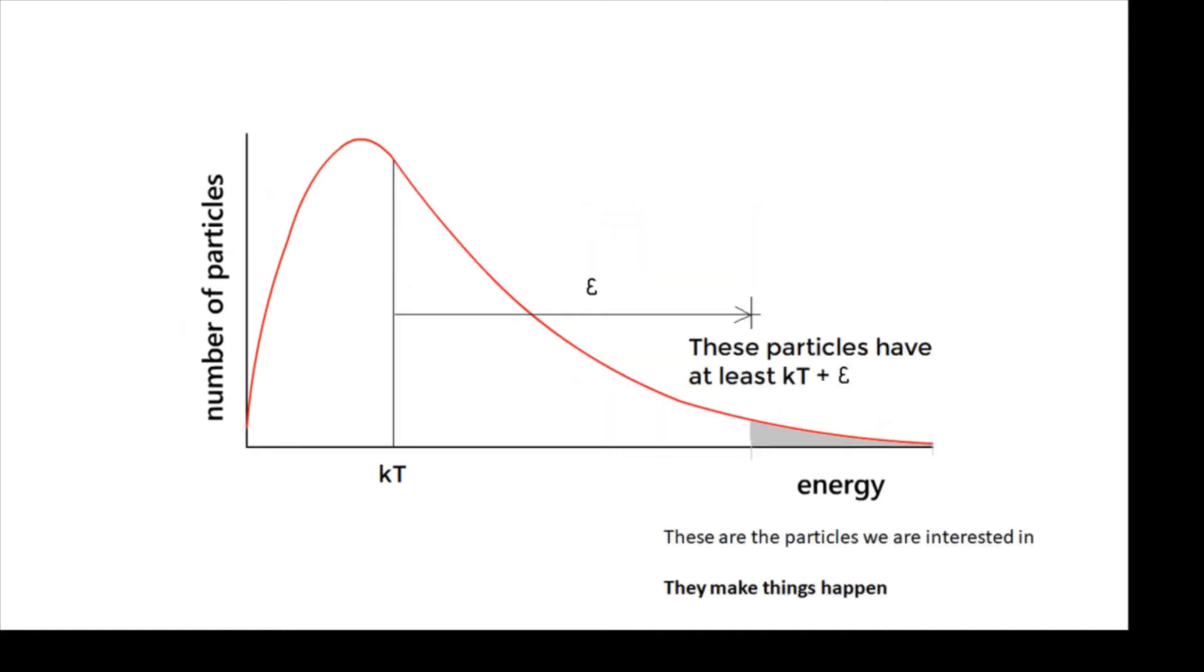For example, this grey shaded area here, these particles have lots of energy. There's not very many of them. They have KT, which is the average, plus epsilon, and this little epsilon represents what we call an additional amount of energy. These particles have KT plus epsilon, they have lots of energy, and these particles are the ones that we are usually interested in. Why? Because they make things happen.